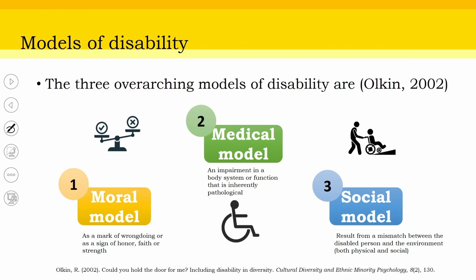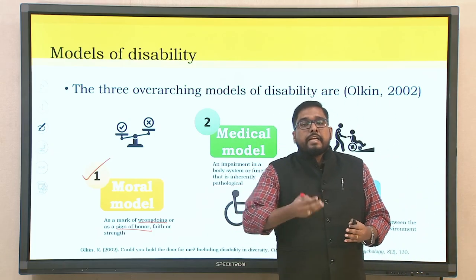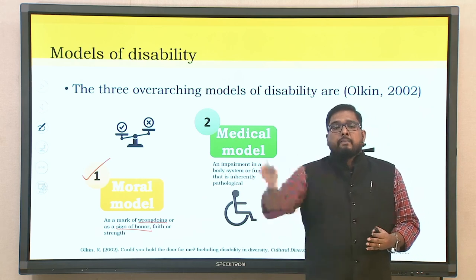There are three overarching models of disability by Olkin 2002. The first is the moral model, which views disability as a mark of wrongdoing or a sign of honor. Many times individuals lament, saying 'I did something wrong and that is why this happened to me,' or conversely, that something good happened and this could be a result of that. This moral compass or gauge actually guides the interpretation of disability.